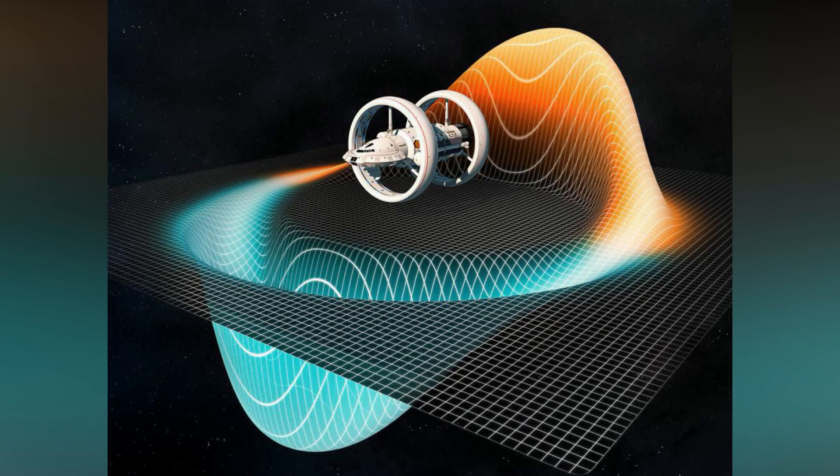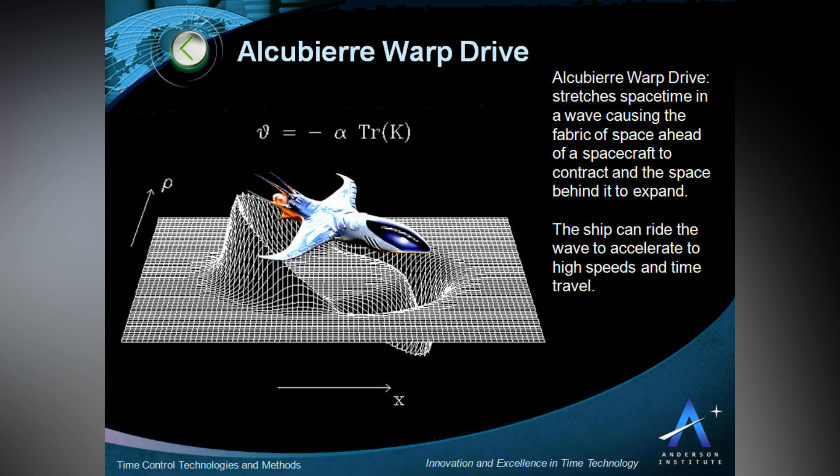Lentz wasn't even the first person to work on making the warp drive a reality. The Mexican mathematician Miguel Alcubierre was the first to attempt it, and his proposal became the starting point of the official literature on warp drives in 1994.